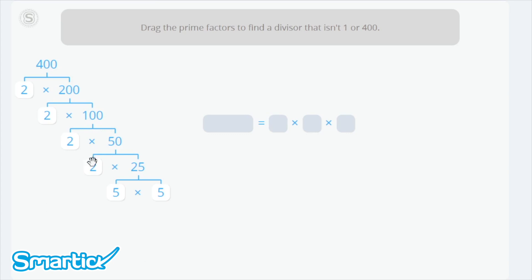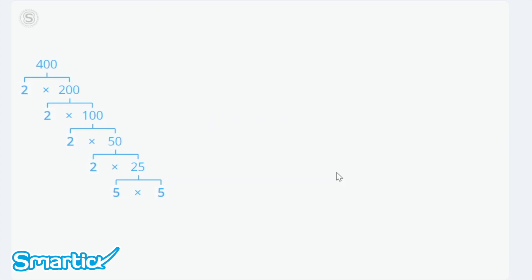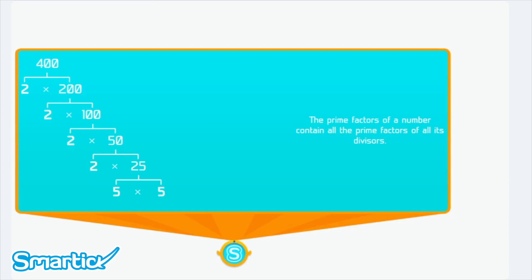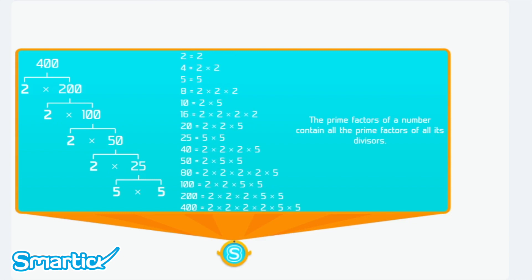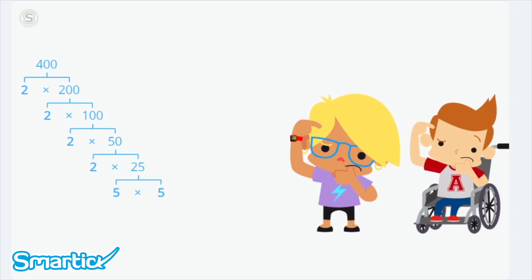The prime factors of a number contain all the prime factors of all its divisors. Therefore, by combining the factors with each other, we always get a divisor of that number. For example, 20 is 2 times 2 times 5, or 80 is 2 times 2 times 2 times 2 times 5. By making all possible combinations, we get all the divisors. This strategy is quicker and easier than doing so many divisions.